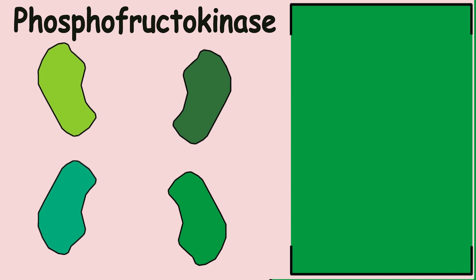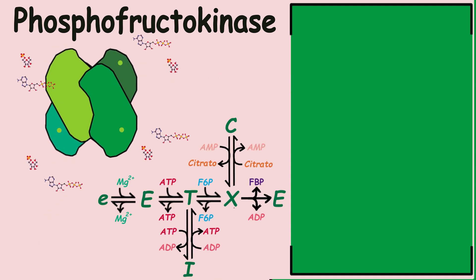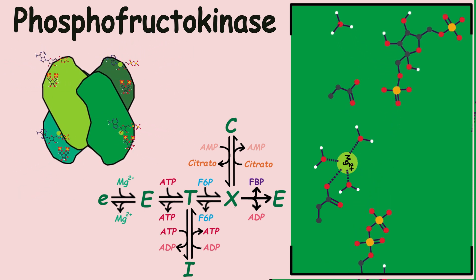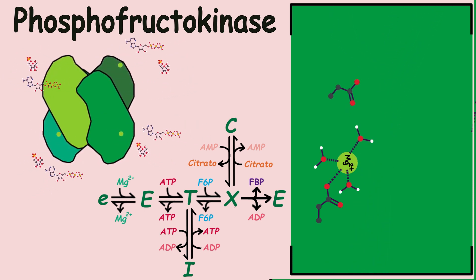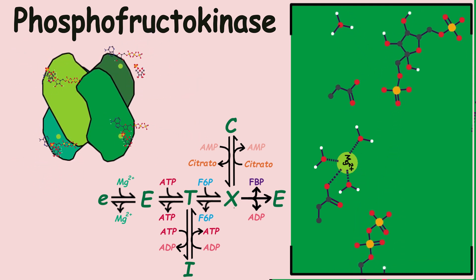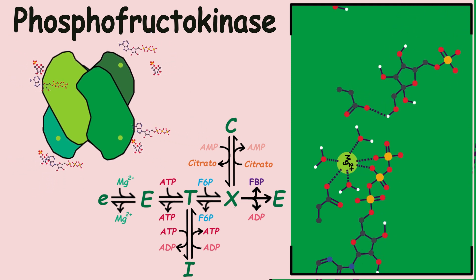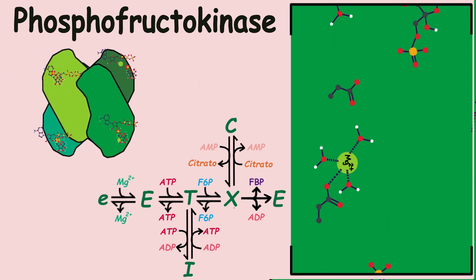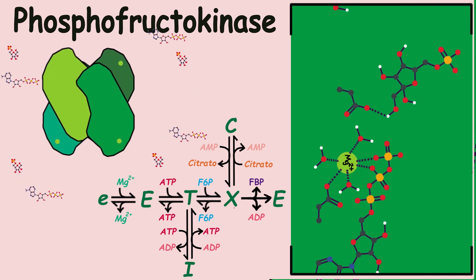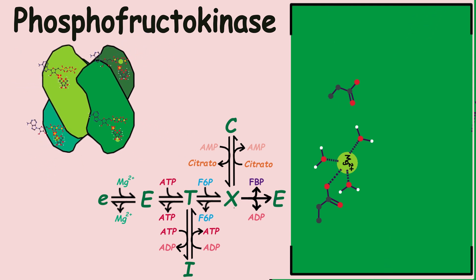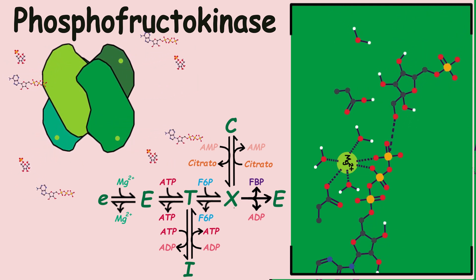The third protein in glycolysis is phosphofructokinase; four of them bind to form a tetramer. This adds more precision to its allosteric regulation, since each protein cooperatively affects the others. Phosphofructokinase acts like a molecular computer that detects the levels of different molecules and decides if the time is right for the breakdown of sugar. When the concentration of ADP and AMP rise and ATP decreases, the cell needs to produce ATP, so the enzyme is activated.